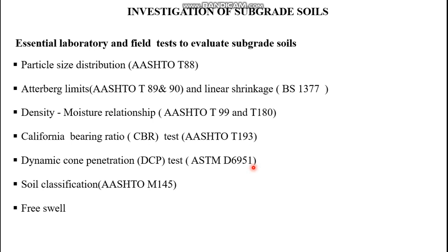The essential laboratory and field tests to evaluate subgrade soils include: particle size distribution, Atterberg limits and linear shrinkage, Proctor compaction test, California Bearing Ratio (CBR), in-situ field tests such as DCP, soil classification, and free swell tests.